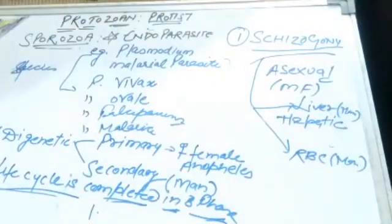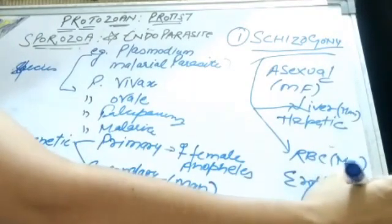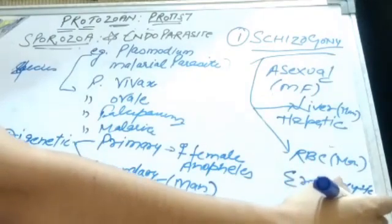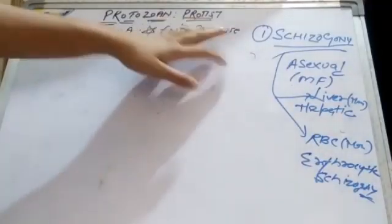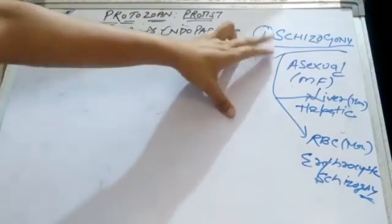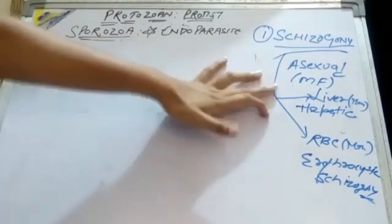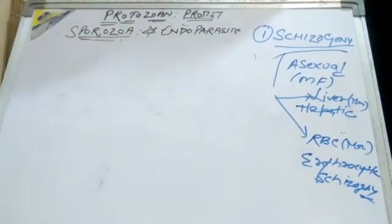The RBC stage is called erythrocytic schizogony, because RBCs are erythrocytes. So schizogony, which is asexual reproduction by multiple fission, has two parts: hepatic schizogony in the liver and erythrocytic schizogony in RBCs.